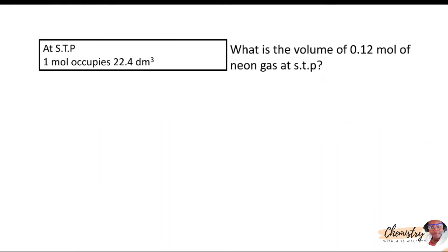To find the volume of 0.12 moles of neon gas at STP, we would simply multiply 0.12 times 22.4, since every mole occupies 22.4 dm cubed at STP.